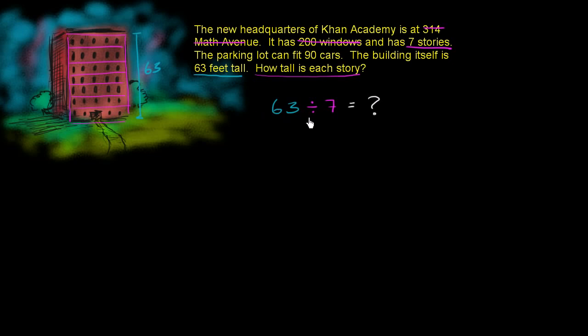Now, 63 divided by seven being equal to question mark, this is another way of saying that seven times question mark is going to be equal to 63. Let me write that down. So this is another way of saying that 63 is equal to seven times question mark. So if we can figure out what do we have to multiply seven by to get to 63, then we know what 63 divided by seven is.